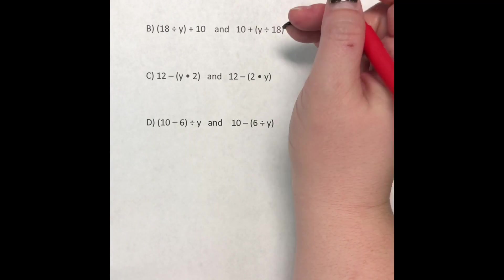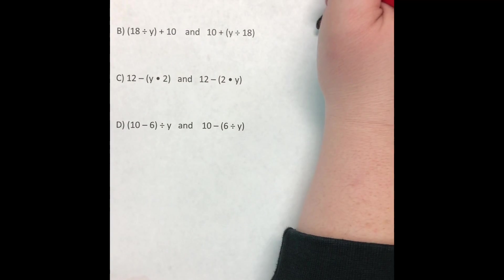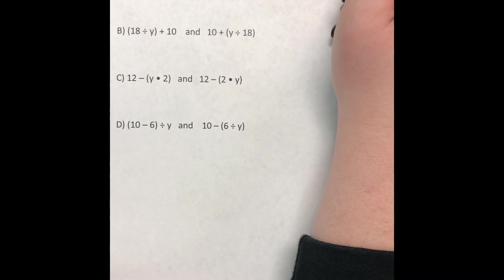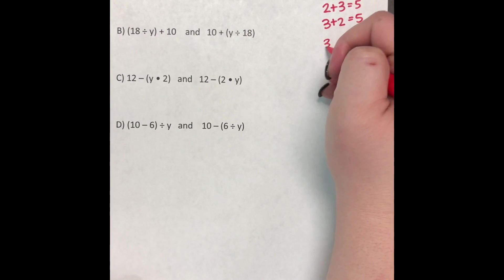So adding and multiplying can be reversed, and I'm going to show you what I'm talking about. Two plus three can be reversed and be three plus two because they're both going to equal five. Same thing for multiplication. Three times four equals 12, and four times three equals 12. So they are reversible. They are rearranged.